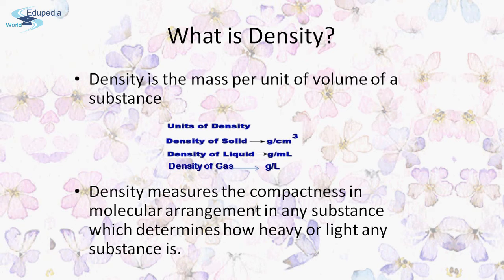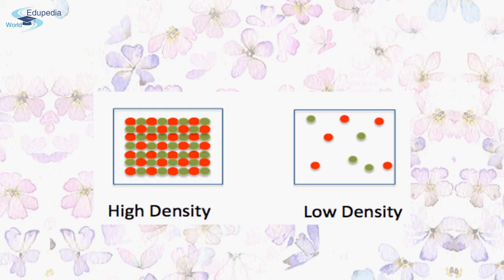Density determines how heavy or light any substance is. Density also depends upon the arrangement or compactness of the substance. Molecules in which the arrangement is very compact have a higher density, whereas a substance with very low compactness of molecules will have a low density.